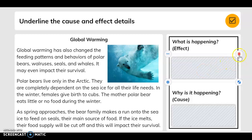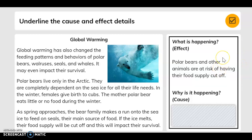So, what is happening? What's the effect? Polar bears and other animals are at risk of having their food supply cut off. Why is it happening? The cause is ice is melting from the rising temperatures of global warming.